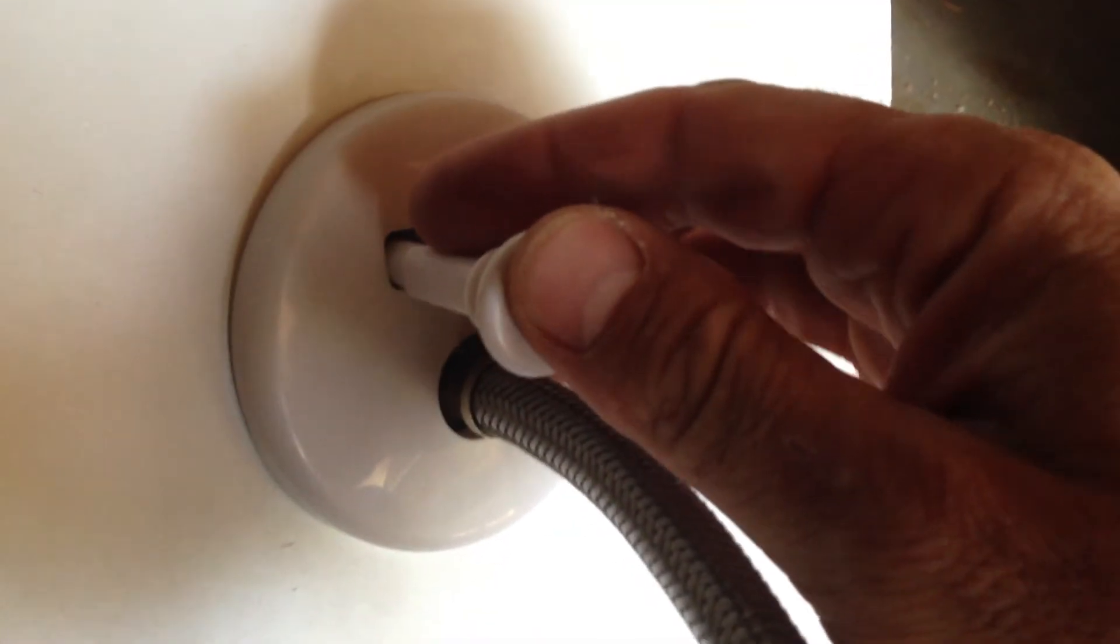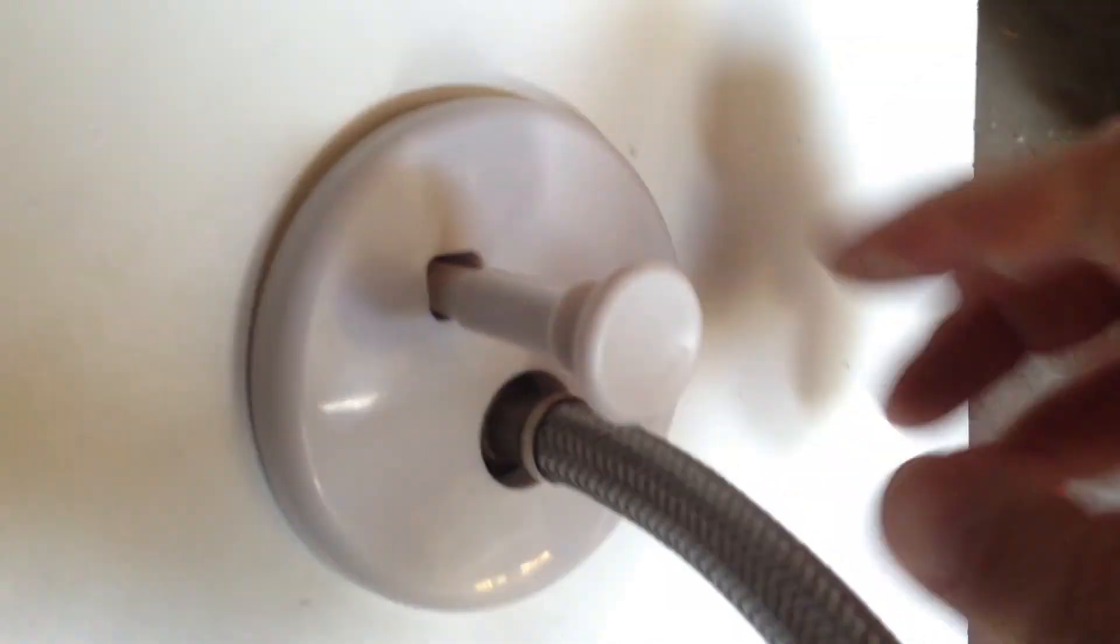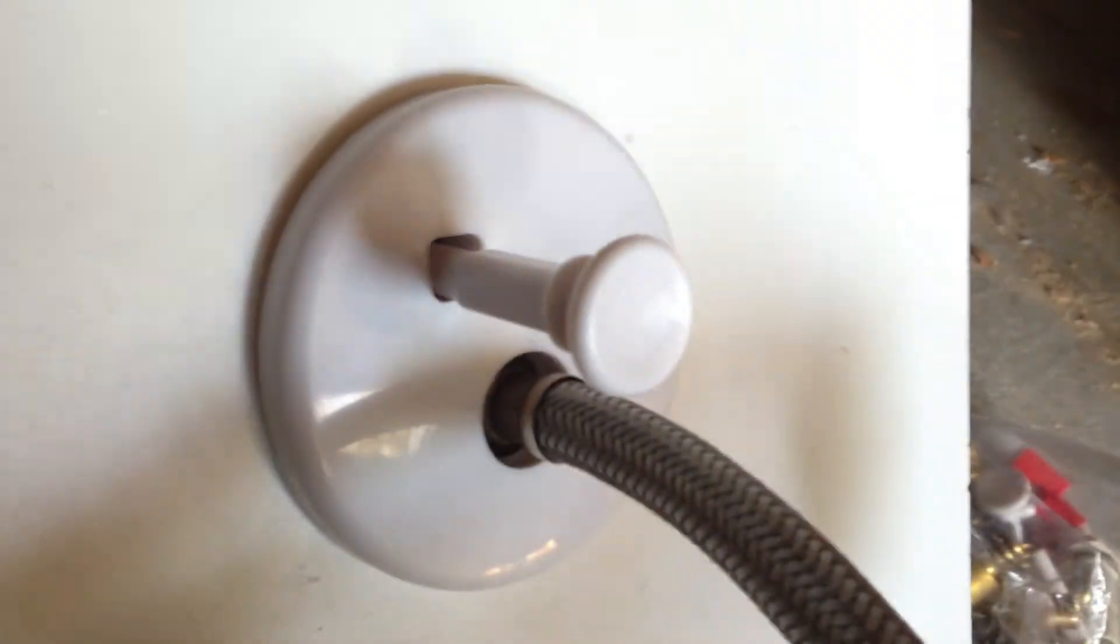When you're ready to turn the water on and your knob is attached, you just push that in and now your water's on. If you need to turn the water off, you just pull this valve handle out and you're off.